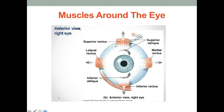Here we can see the muscles around the eye. There are six muscles that move the eye: four are rectus muscles — rectus means straight — and two are oblique muscles. We have the superior rectus, inferior rectus, medial rectus, and lateral rectus. Then we also have two oblique muscles — superior oblique and inferior oblique — because oblique means diagonal.